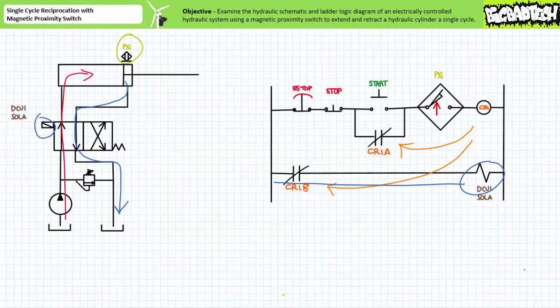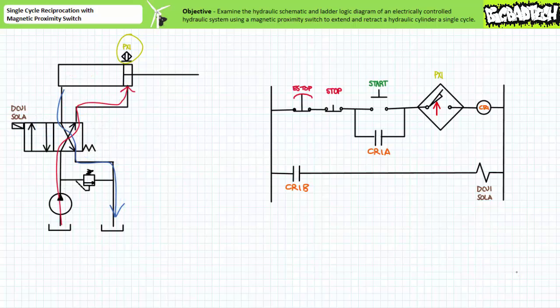Contact PX1 opens, which breaks the current path energizing the coil of control relay CR1. All contacts associated with CR1 return to their deactivated state. CR1A opens and removes the holding circuit; CR1B opens and DCV1 Sol A is de-energized. On the hydraulic side the de-energized solenoid returns the spool to the cross-connect position. Pressurized flow enters the rod end, the cap end is connected to tank, and the cylinder retracts.